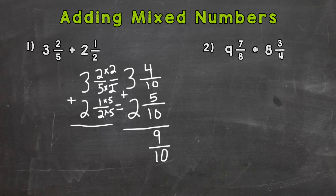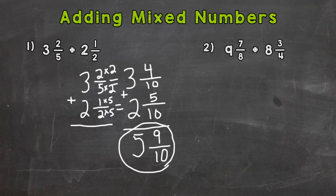So nine-tenths is our fractional part. Now we add the whole numbers: three plus two is five. Always check to see if the fractional part can be simplified — in this case it cannot. So our final answer is five and nine-tenths. Let's jump into number two.